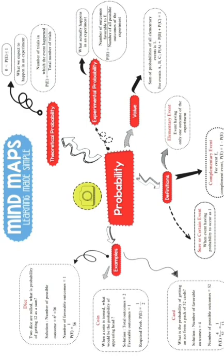To measure the amount of certainty or uncertainty — that means whether it may happen or may not happen — in order to measure this amount of certainty or uncertainty mathematically, we have the theory of probability.